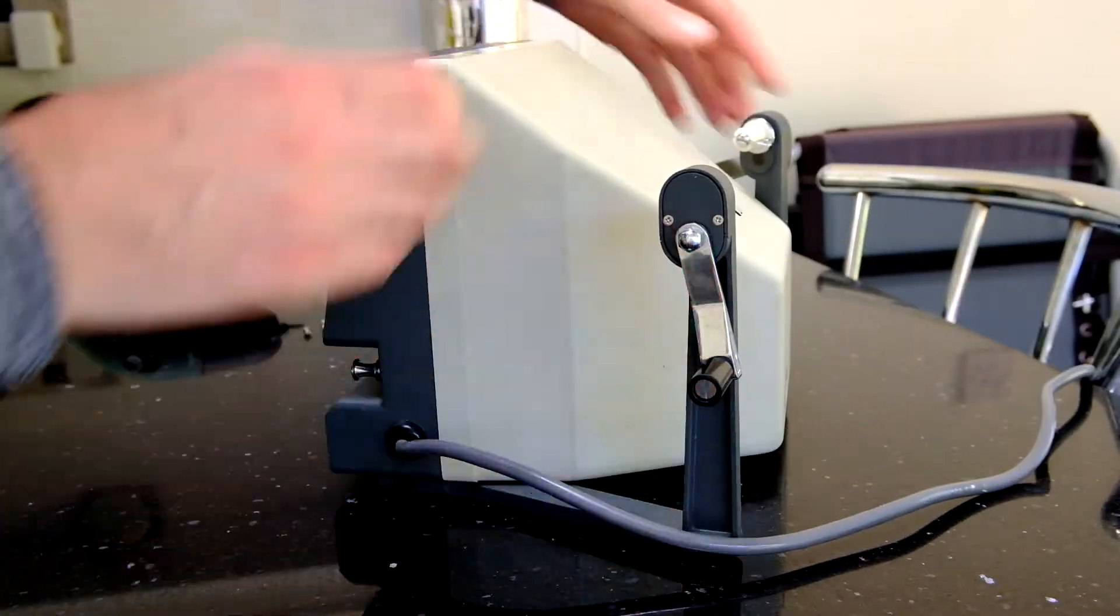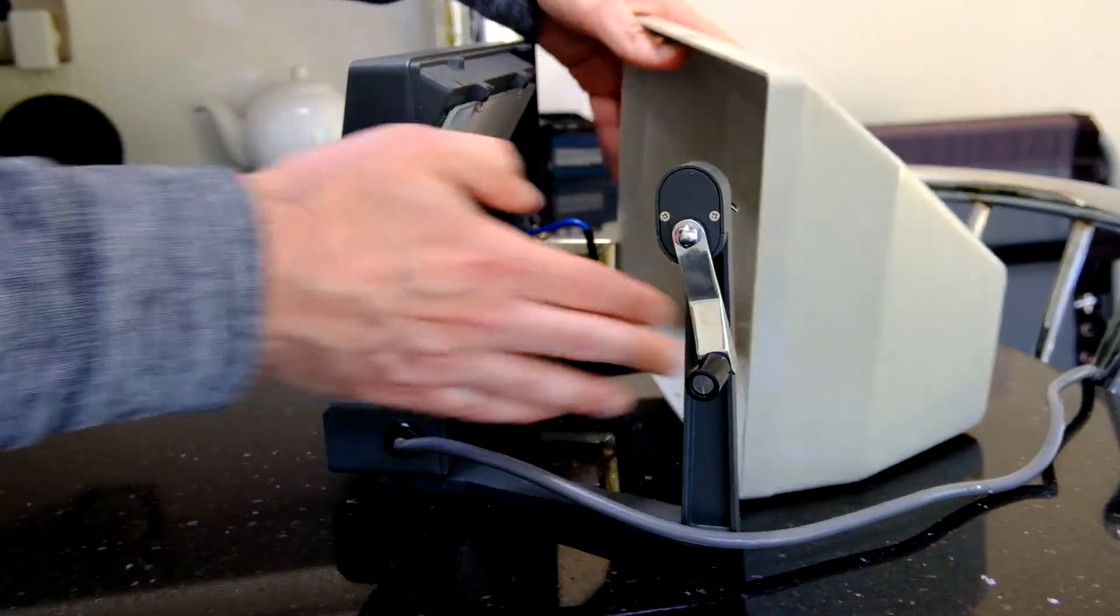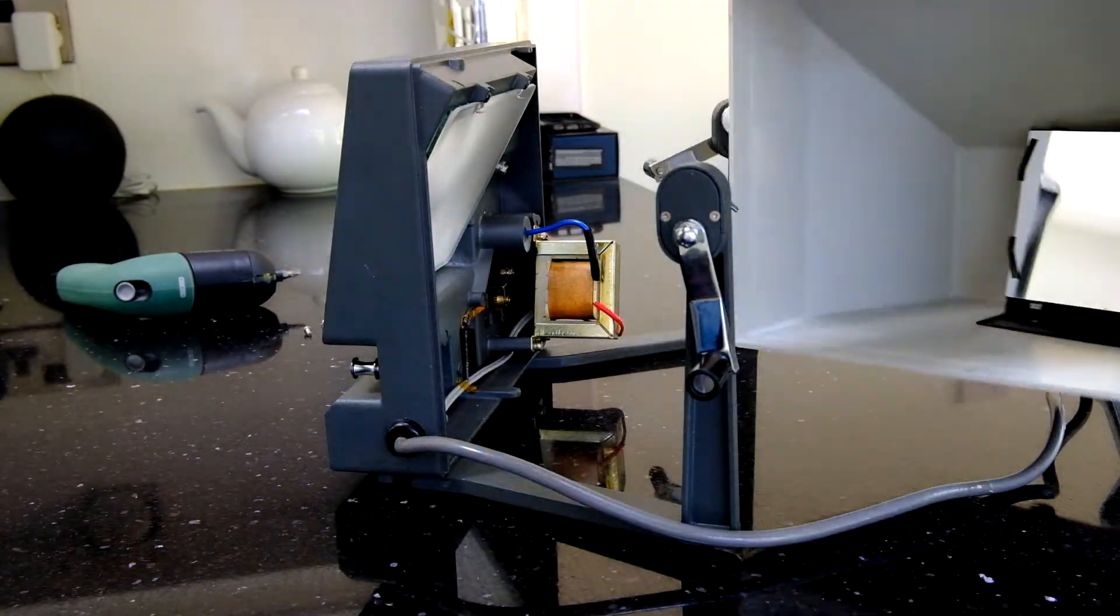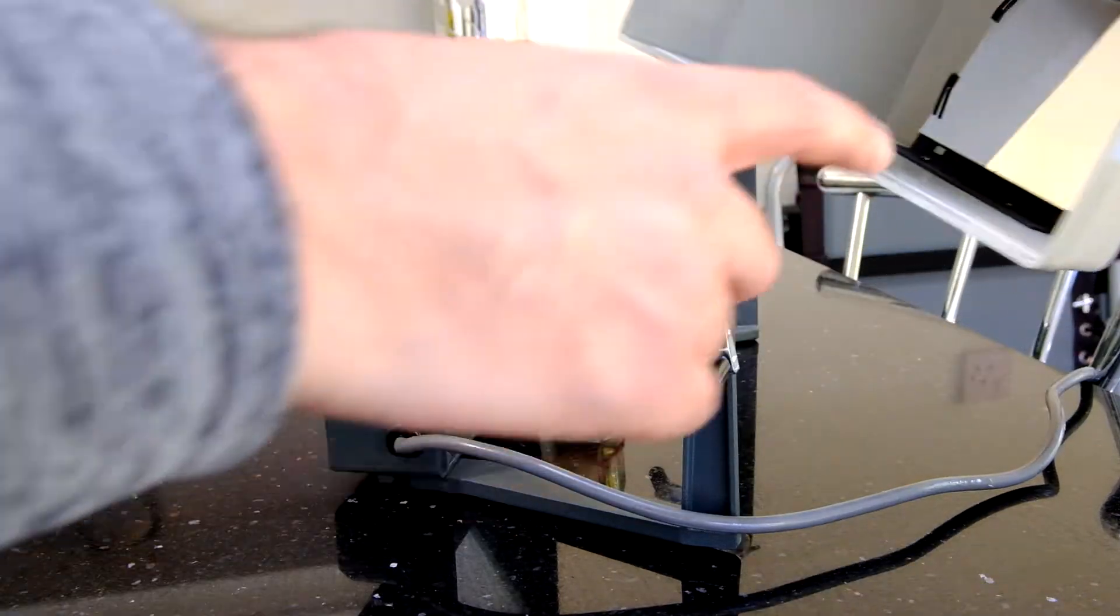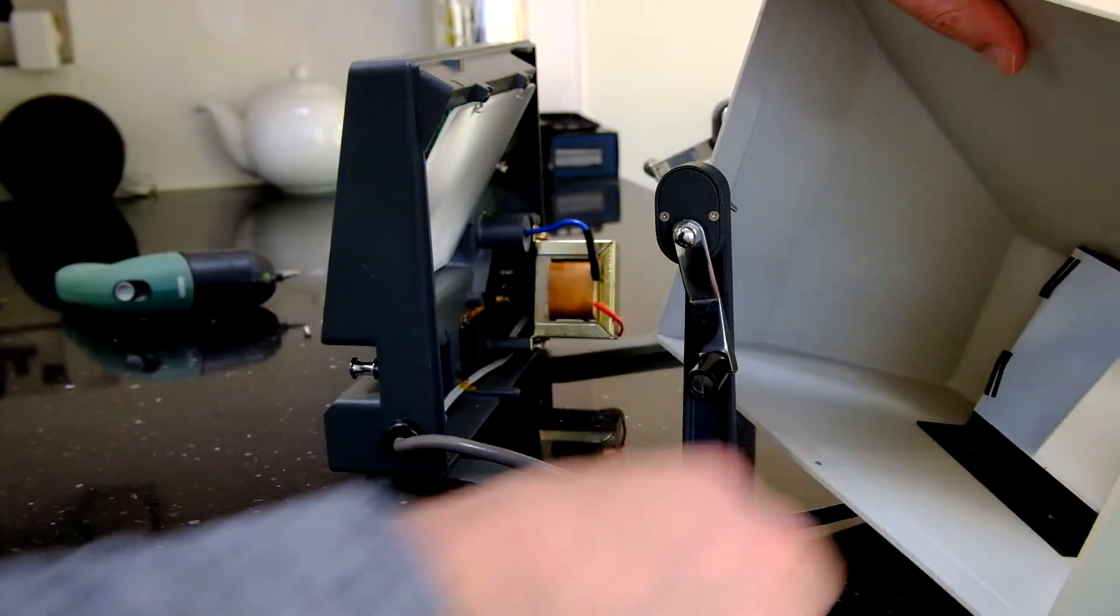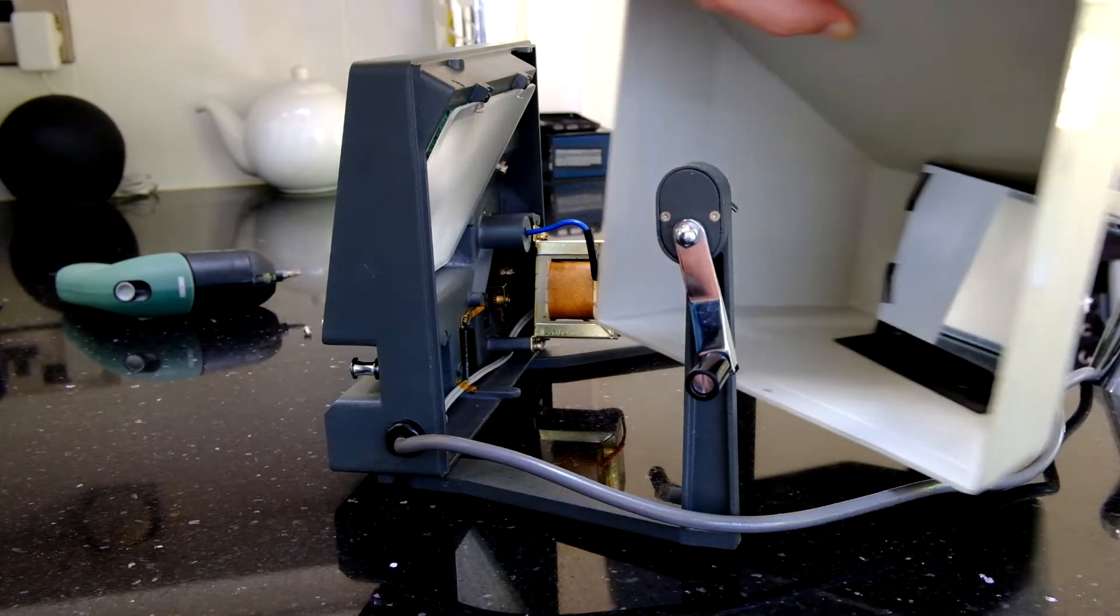If we just move these out a little bit, the back comes straight off. In there there's actually a mirror that is screwed down into the base that bounces the picture off the film into this Fresnel lens, which displays the image from the film.